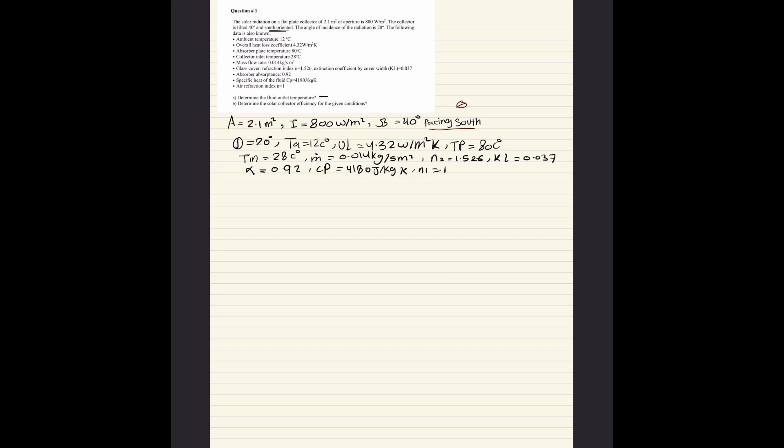Part A: determine the fluid outlet temperature. Part B: determine the solar collector efficiency. Let's start with the temperature, so we need T out. To find T out we need to use one of these three equations: QU equals m CP times T out minus T in, QU equals AC times S minus UL times TP minus TA, or QU equals FR times AC times S minus UL times TFI minus TA.